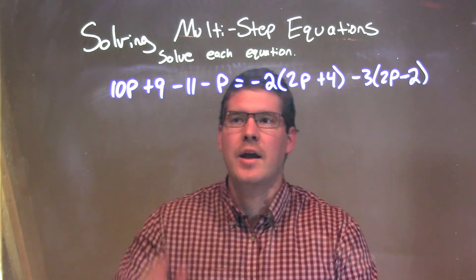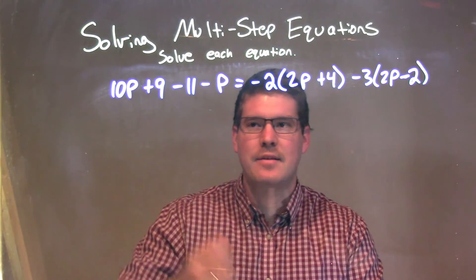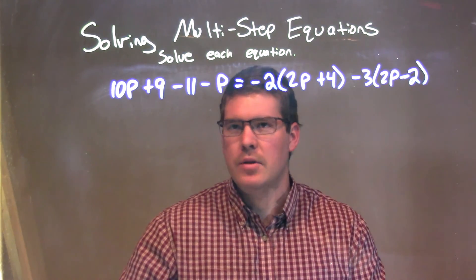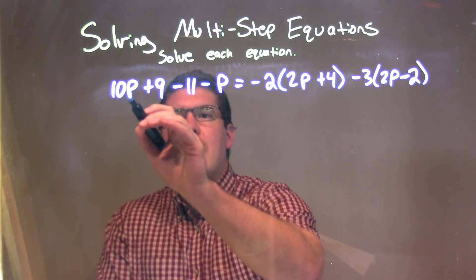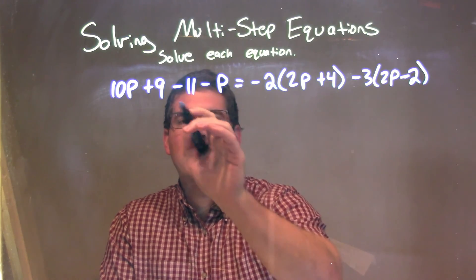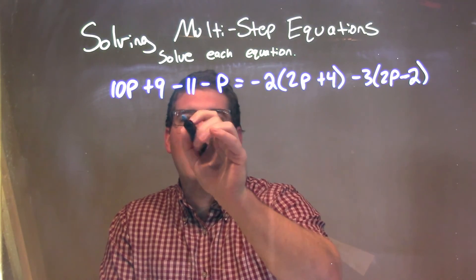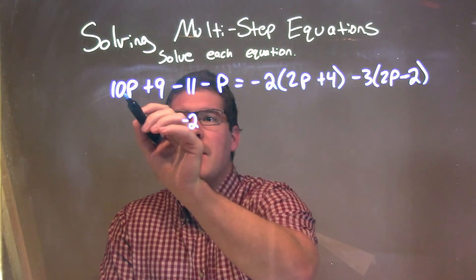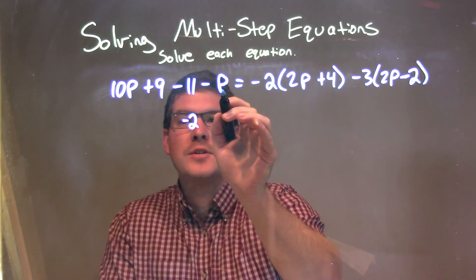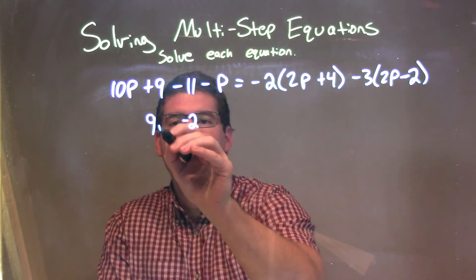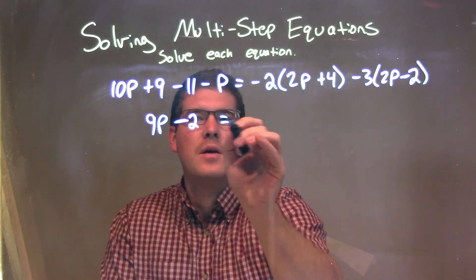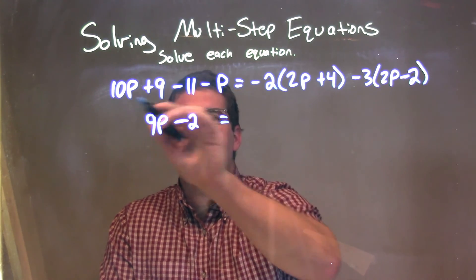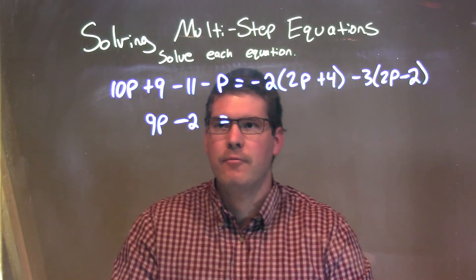What we're going to do is simplify on each side of the equation until we get down to a simple form on either side individually — basically combining our like terms. We have 9 minus 11, which comes out to be negative 2. And then 10p minus p comes out to be 9p. So we have 9p minus 2.